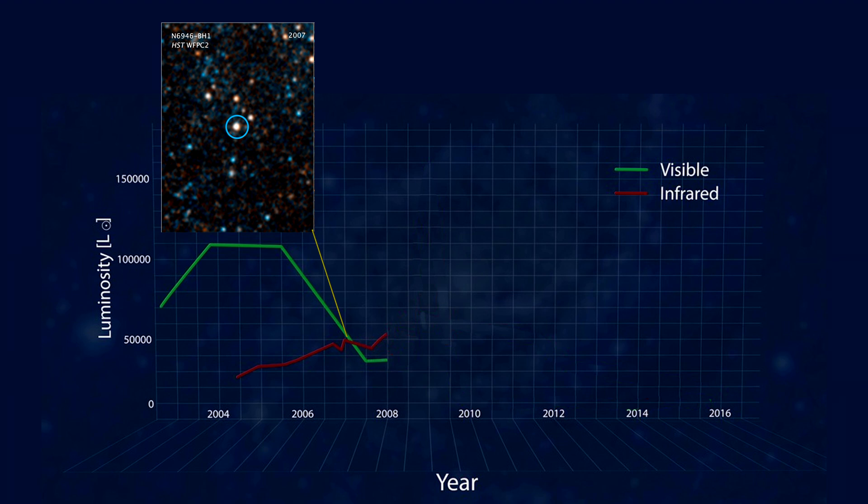In 2009, the star shot up in brightness to become over one million times more luminous than our Sun for several months. The expectation was it was about to supernova.